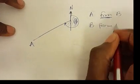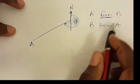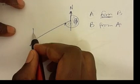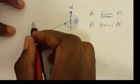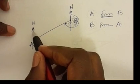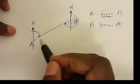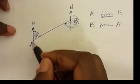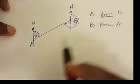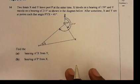If they ask for the bearing of B from A, it means you are standing at A. You draw a north line there, and measure clockwise from the north until you reach the line connecting A and B. We also said bearings are always written using three digits.